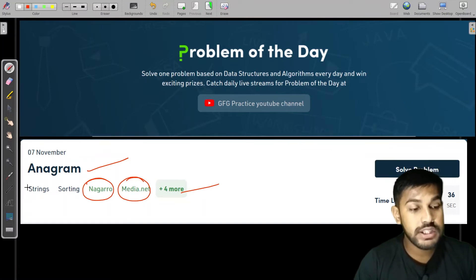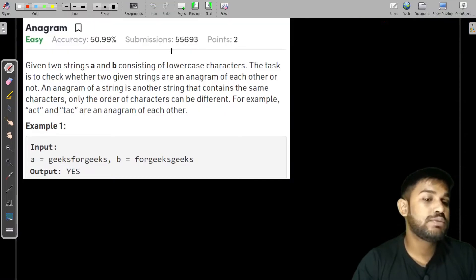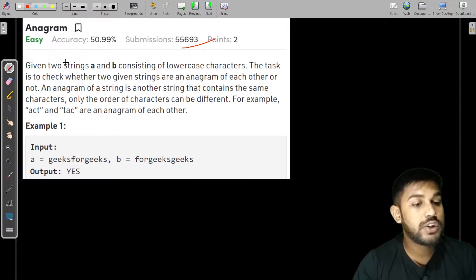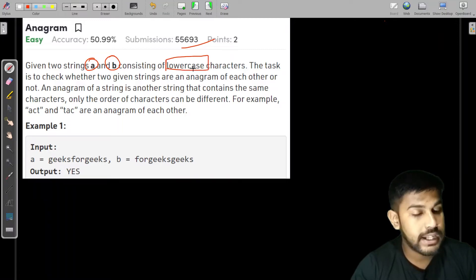This question is related to strings and sorting. Now let's move to the problem statement. We are given two strings A and B consisting of only lowercase characters. The task is to check whether two given strings are an anagram of each other or not.